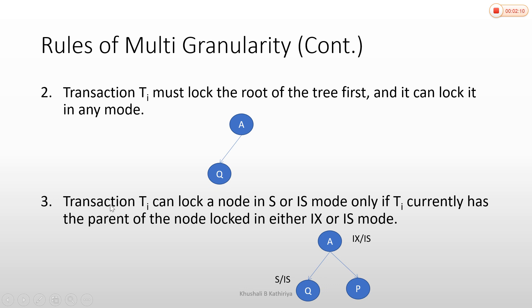The third rule: transaction TI can lock a node in S or IS mode only if TI currently has the parent of the node locked in either IX or IS mode. This is called the child node's IS mode. For the parent node, you will use the intention exclusive or intention shared. If the intention is shared, then the child lock is shared. If intention exclusive, then it is also shared.